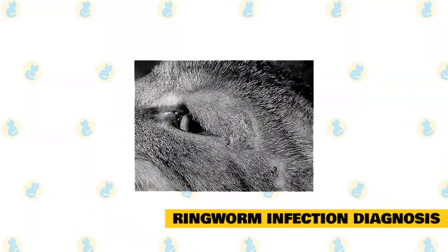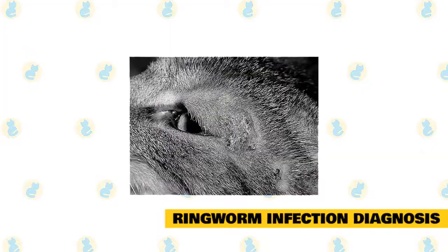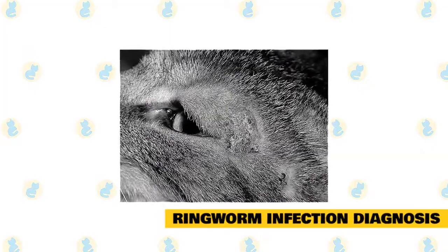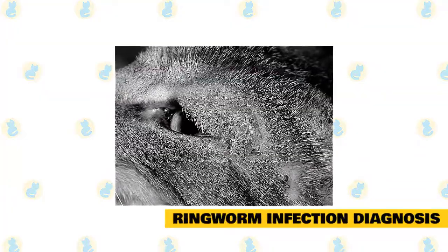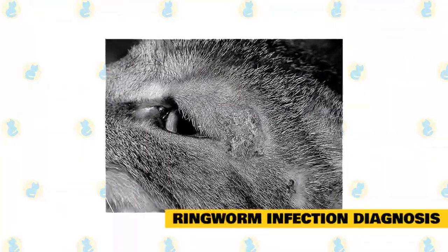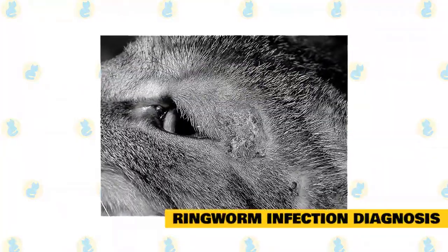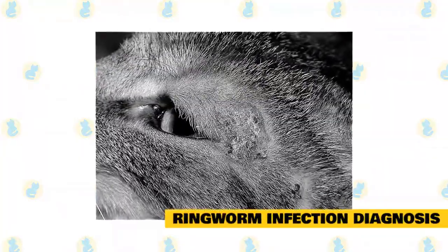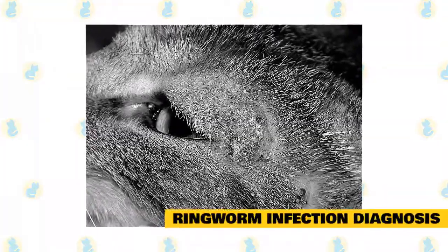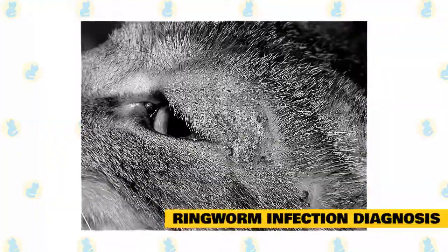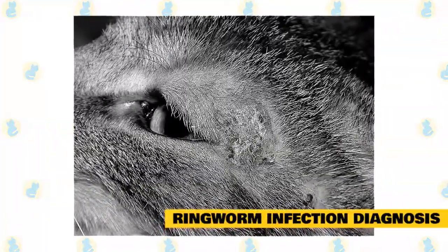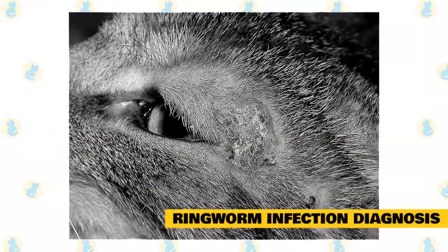Ringworm Infection Diagnosis. The majority of cases of feline ringworm caused by M. canis will glow with a yellow-green fluorescence when the skin and coat are examined in a dark room under a special ultraviolet lamp called a Woods lamp. However, not all cases show clear fluorescence and some other species of dermatophytes do not fluoresce under a Woods lamp. Therefore, additional diagnostics may be needed to confirm ringworm fungi are present. Some skin ointments and other materials also fluoresce and may give a false positive result.